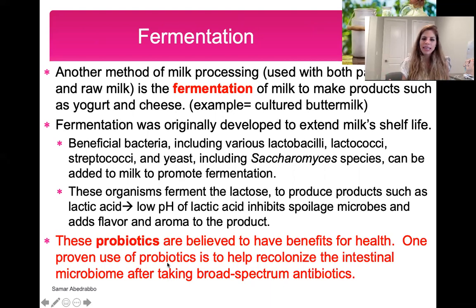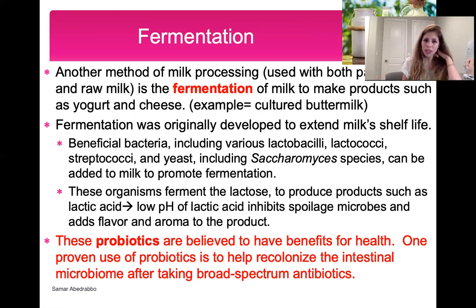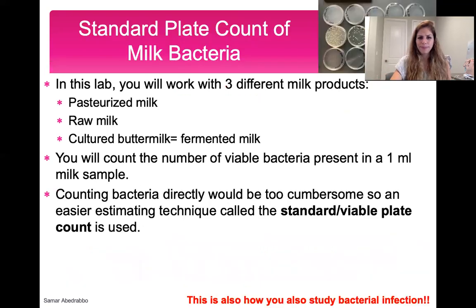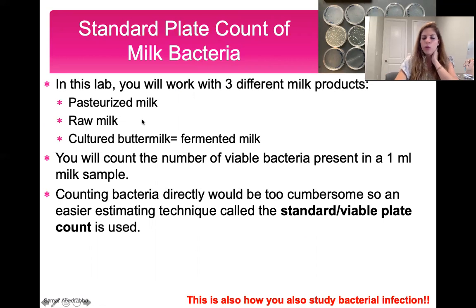Probiotics — good bacteria — help promote better intestinal health. This is especially important because if someone is taking broad-spectrum antibiotics, which target gram-positive, gram-negative, and all types of bacteria, the antibiotics kill the good bacteria too. That's why probiotics are important: they keep the good bacteria in your gut and intestines. So we've now covered the background on pasteurized milk, raw milk, and fermented milk — examples of fermented milk include cultured buttermilk and yogurt.